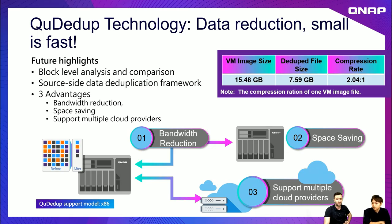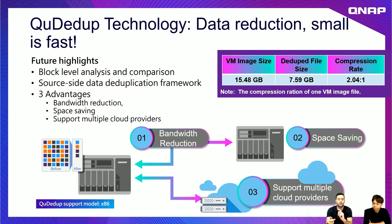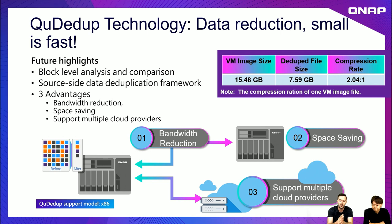Data reduction means smaller and faster. We've tested it and seen it provides three advantages with data deduplication: as a block-level based data management, deduplication on backup reduces bandwidth consumption, it is space-saving, and it supports multiple cloud services - currently 22 cloud services, and this number will keep increasing. For example, a VM image reduced from 15.48 GB to 7.59 GB after deduplication, with a compression rate of 2.04 to 1.